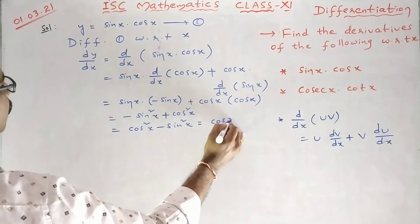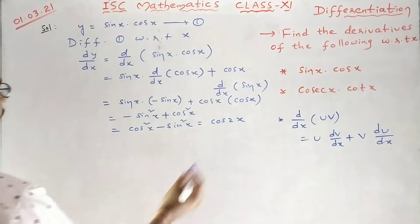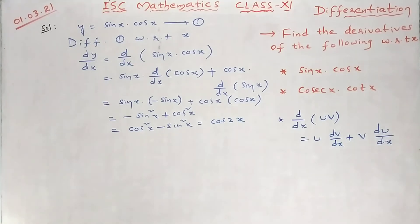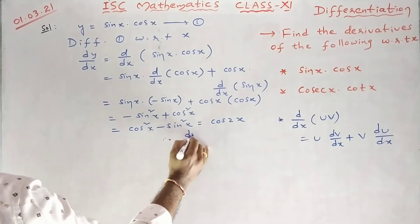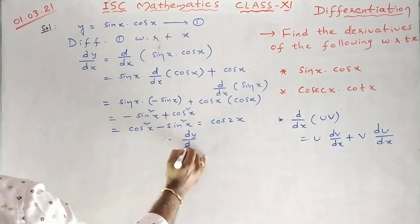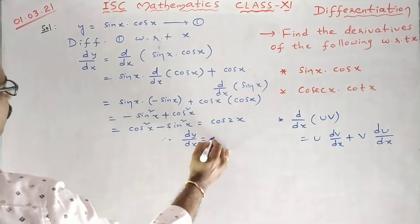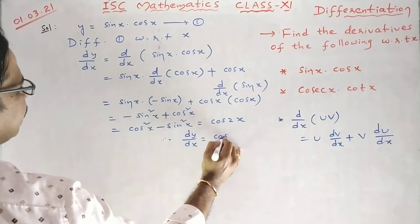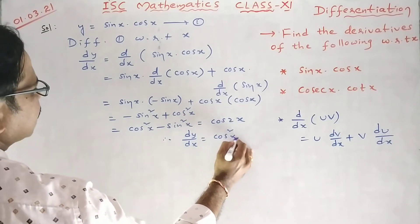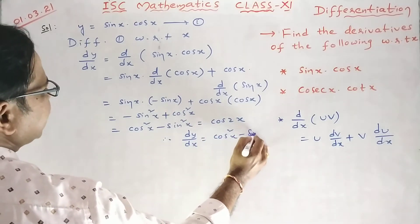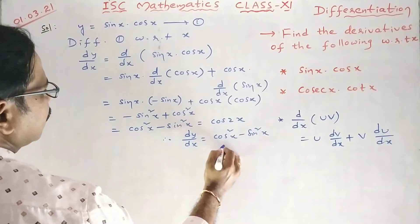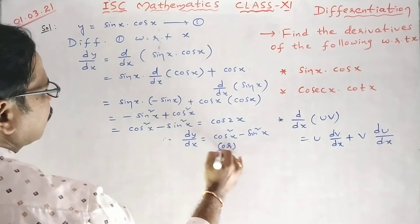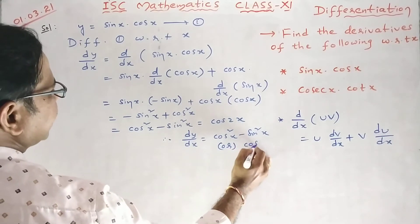We can also write cos 2x — it is the formula. So dy/dx equals either cos squared x minus sin squared x, or cos 2x.